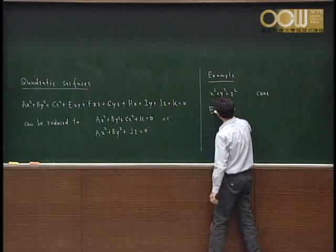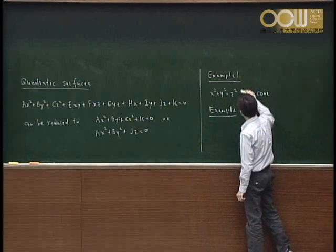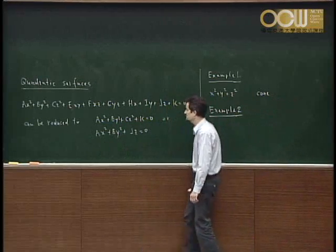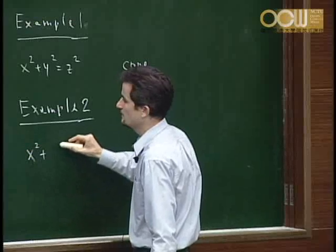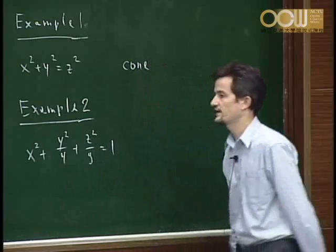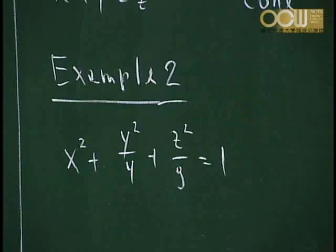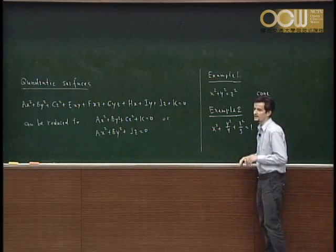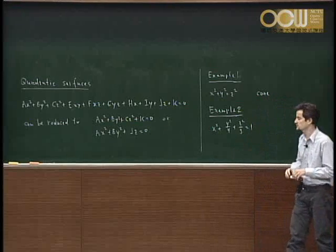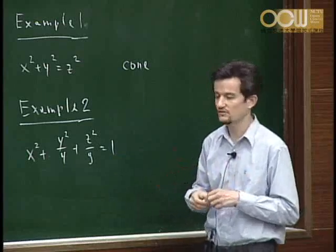Let's look at examples for all of those types. Example one gives the first type. For example two, we choose k as negative and all others positive. This gives the ellipsoid — all the cross-sections, obtained by slicing the surface with planes parallel to the coordinate planes, are ellipses. This surface looks like an egg and is called the ellipsoid.